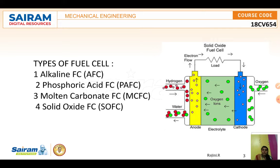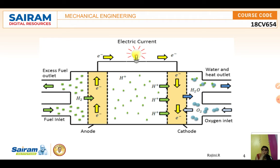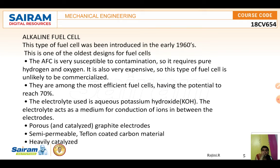The first type is alkaline fuel cells. This type of fuel cell was introduced in the 1960s and was used as a primary source of electricity in the space program. These cells have an alkaline solution which acts as a membrane used to separate the electrodes. The operating temperatures of these cells are quite low, approximately 90 degrees Celsius.